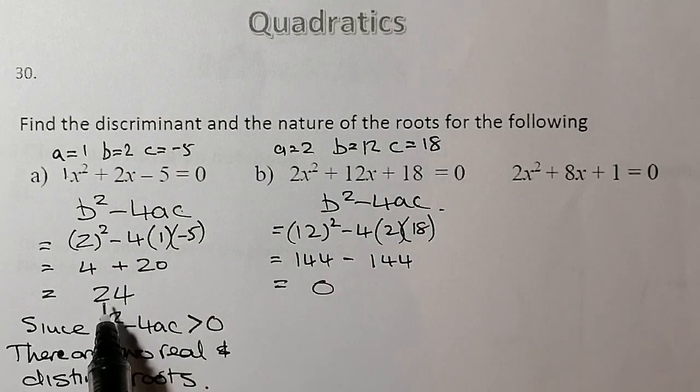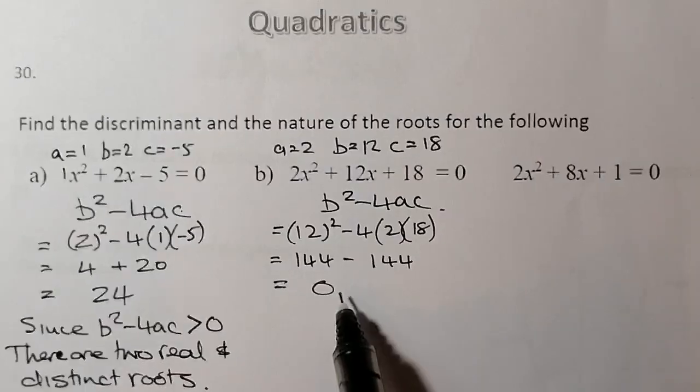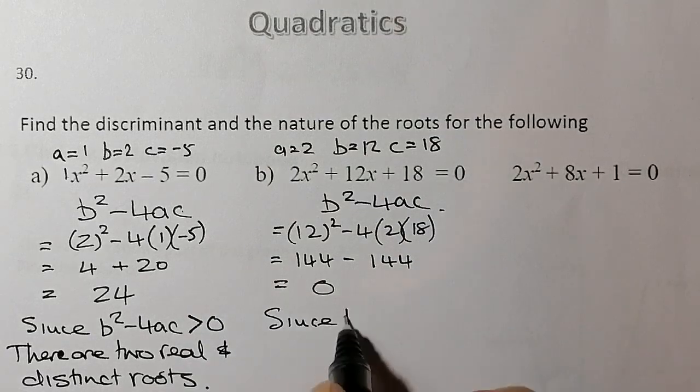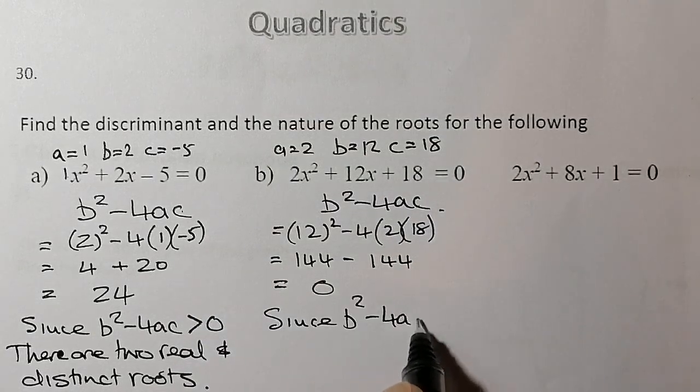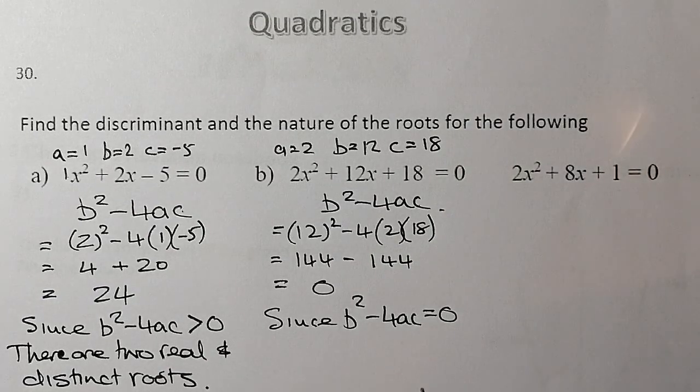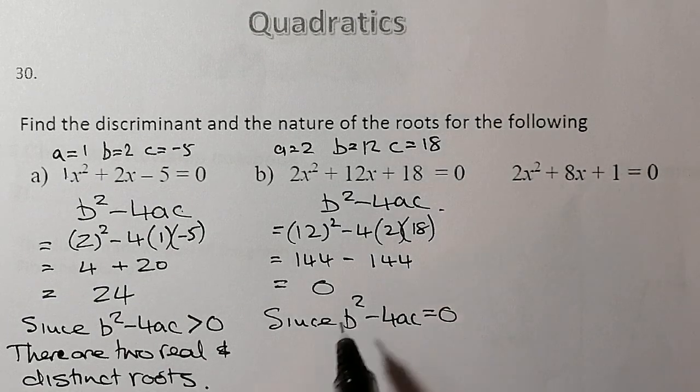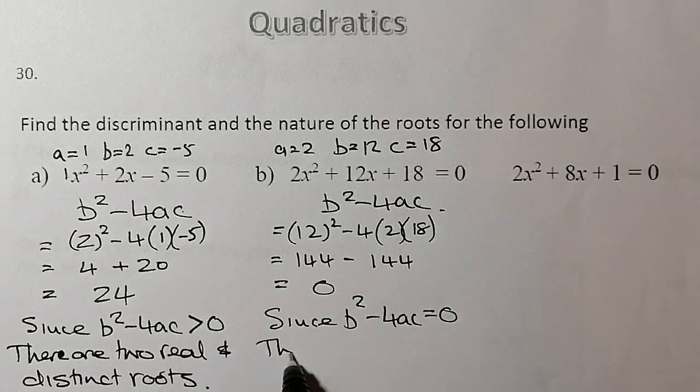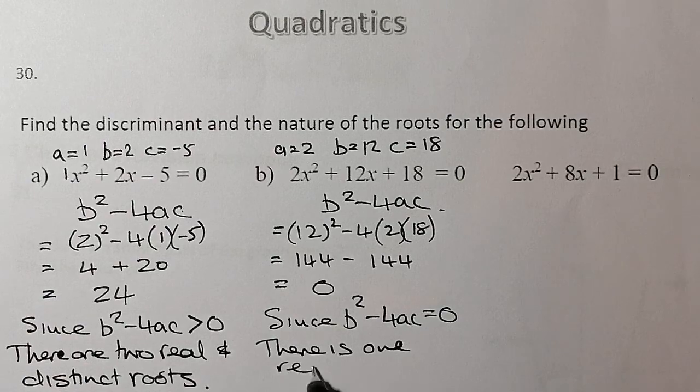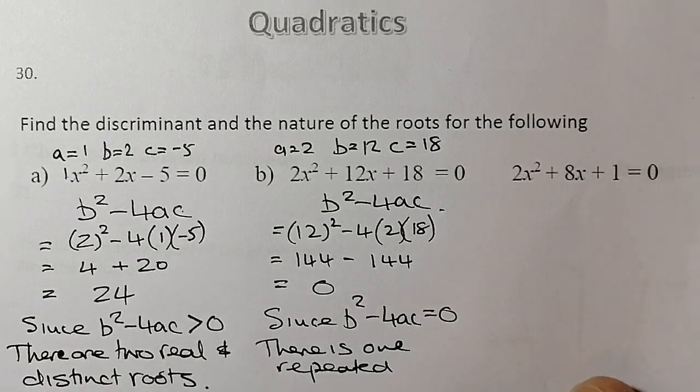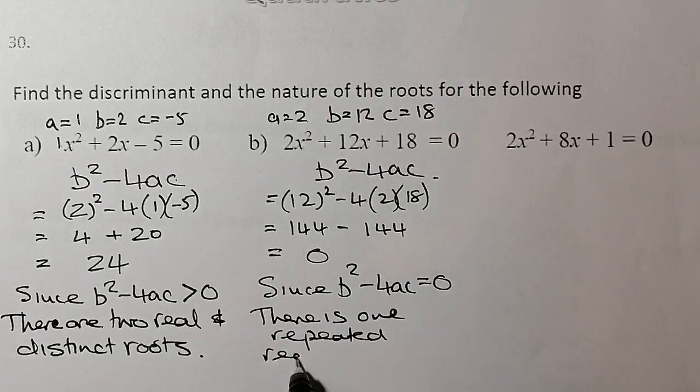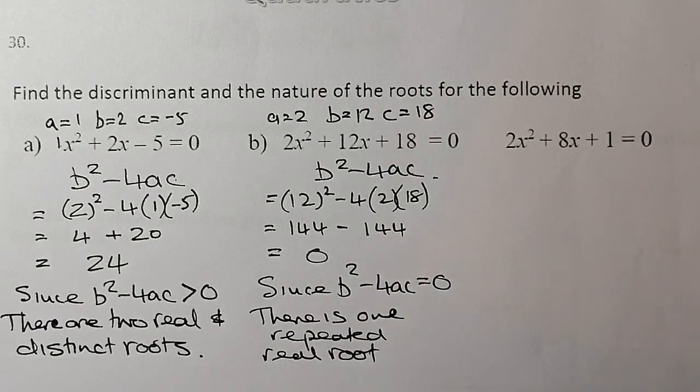So that's a different situation than we had from A. We've got b² - 4ac = 0. So statement, since b² - 4ac is actually equal to 0, for this one here we'll say that there's one repeated real root.